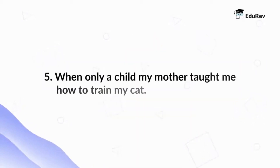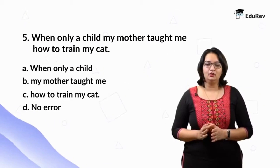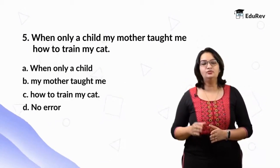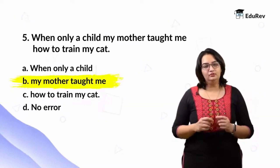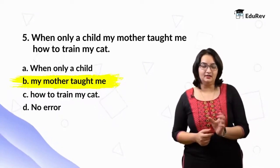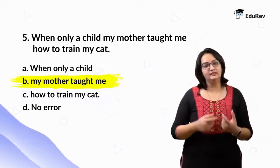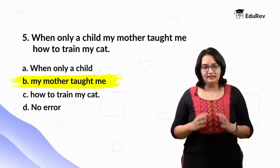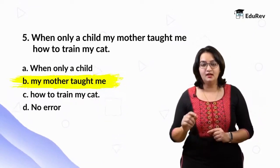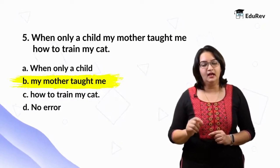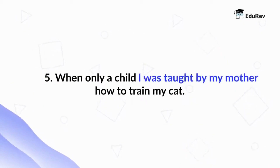Let us go to the next example: When only a child, my mother taught me how to train my cat. Option A: when only a child. Option B: my mother taught me. Option C: how to train my cat. Option D: no error. The error lies in part B. When you look at the first part, it says when only a child; however, the placement of mother and me are jumbled up, making it difficult to ascertain who was a child. The mother cannot be a child if she is teaching her daughter how to train a cat. This type of error is called a dangling modifier and should be avoided at all costs. The correct answer is: When only a child, I was taught by my mother how to train my cat.